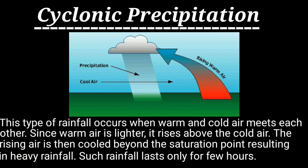Water vapor suspends in the air and eventually water falls. This is typical of tropical areas — for example, the Bay of Bengal. Now, second, we discuss about convective precipitation.